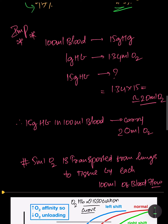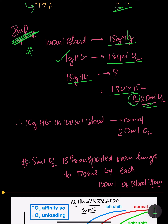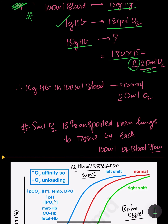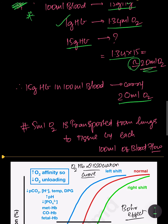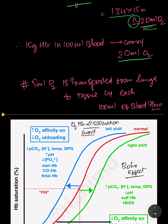Here is an important calculation: 100 ml of blood contains approximately 15 grams of hemoglobin. One gram of hemoglobin can carry 1.34 ml of oxygen, so 15 grams can carry 1.34 × 15, which equals approximately 20 ml (actually 19.8 ml). Therefore, 15 grams of hemoglobin in 100 ml of blood carries 20 ml of oxygen, and 5 ml of oxygen is transported from lung to tissue by each 100 ml of blood flow.